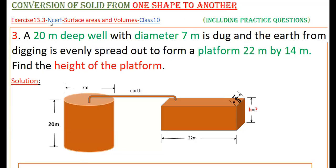Hello everyone. Today I am going to tell the solution of the third problem from exercise 13.3 from NCRT, from surface areas and volumes, class 10. A 20 meters deep well with diameter 7 meters is dug and the earth from digging is evenly spread out to form a platform 22 meters by 14 meters. Find the height of the platform.